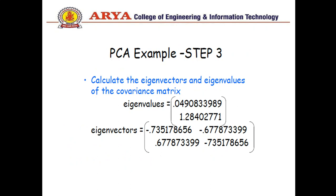When we solve the covariance matrix, we find eigenvectors and eigenvalues. First we calculate eigenvalues. Eigenvalues can be calculated by the formula c minus lambda I. By using the determinant you can solve and get two values of lambdas: lambda 1 equals 0.4908 and lambda 2 equals 1.2840.